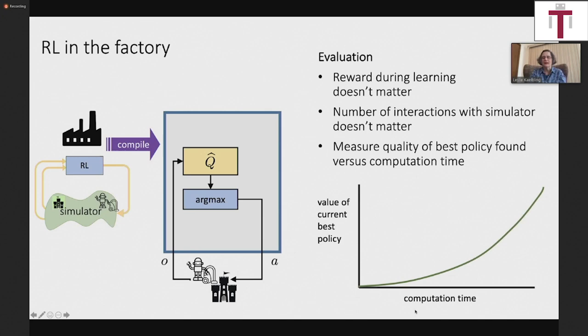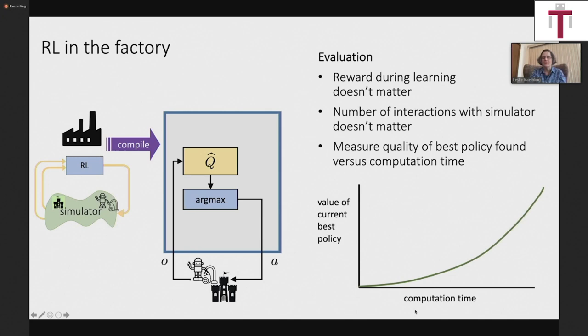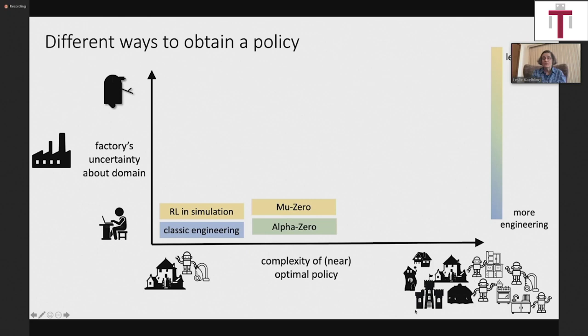One way to use reinforcement learning is to solve problems we already understand, but understand in a different way — not in a way that lets us write the policy down. You could look at AlphaZero and then MuZero as methods that can handle somewhat more complicated problems by doing some combination of online planning. They don't just learn the policy or just learn a value function; they do a kind of model predictive control together with some learned control information.